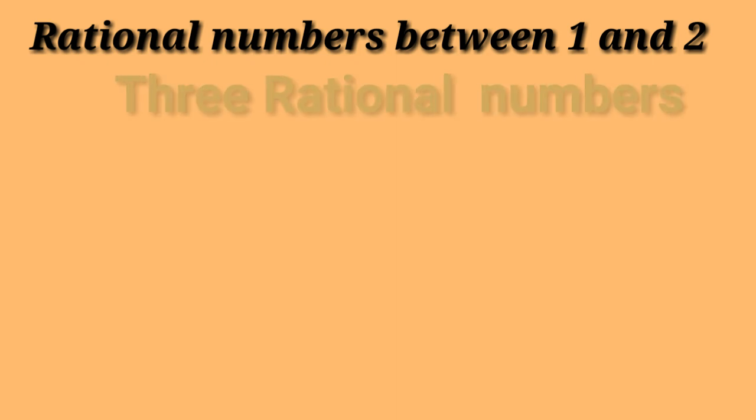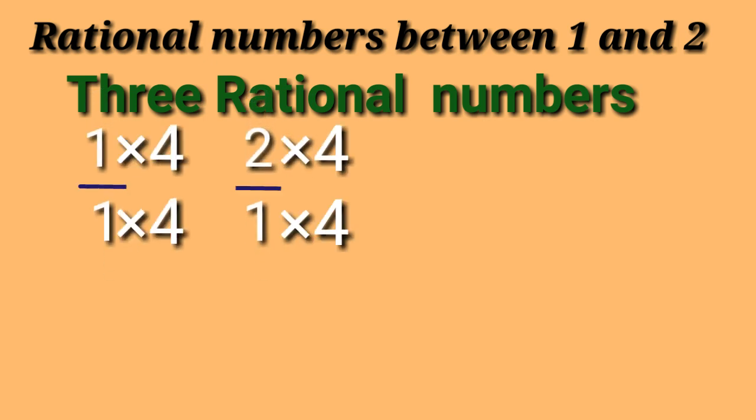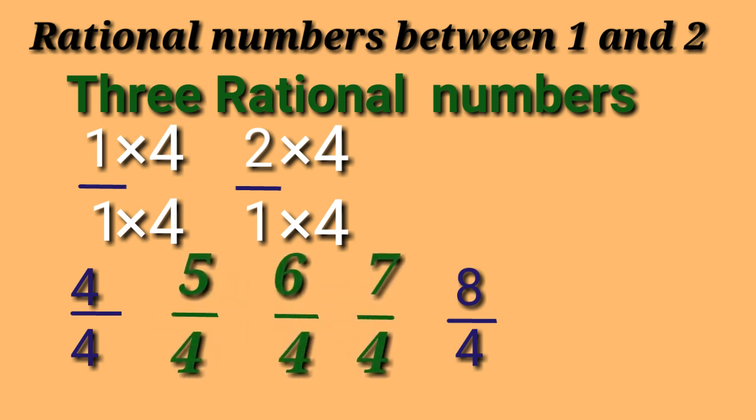Now let's find 3 rational numbers between 1 and 2. What comes after 3? It's 4. So let's multiply numerators and denominators of 1 by 1 and 2 by 1 by 4. If we multiply, we get 4 by 4 and 8 by 4. The numbers between them are 5 by 4, 6 by 4, and 7 by 4.